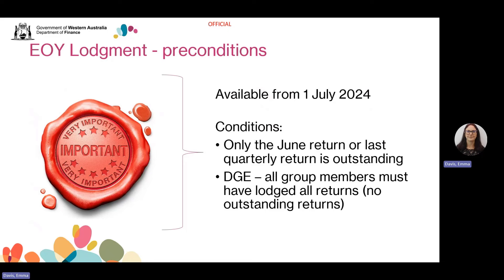So there are no outstanding returns before you can access the End of Year Lodgement option. If you try to access the End of Year Lodgement function with other outstanding returns, or if other members of the group have outstanding returns, you'll be prompted to lodge these returns before you can access the End of Year Lodgement option. You can lodge these returns using the Modify Return and Lodge Return options on the left hand menu.